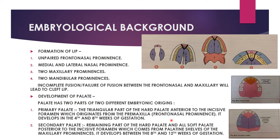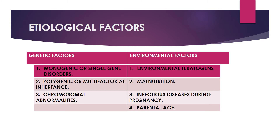Moving to etiological factors, there are genetic and environmental causes. Genetically, there are monogenic or single gene disorders, polygenic or multifactorial inheritance, and chromosomal abnormalities. Chromosomal abnormalities account for about 18% of clefting syndromes and are associated with Down syndrome and Edward syndrome; clefting syndromes are three times more frequent in Down syndrome.